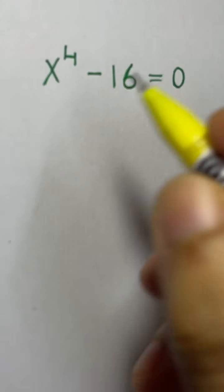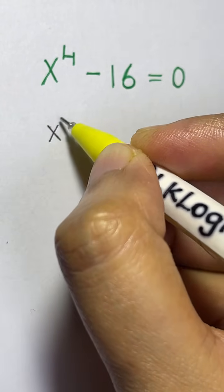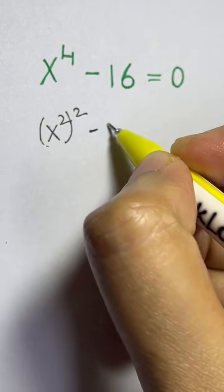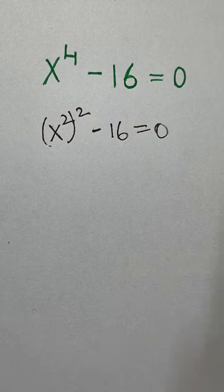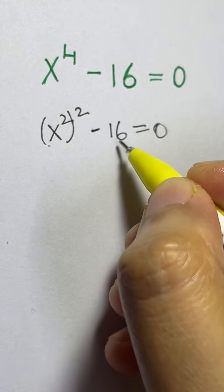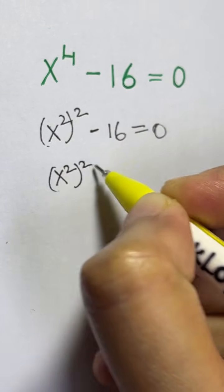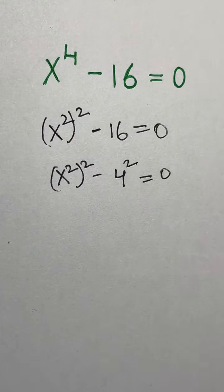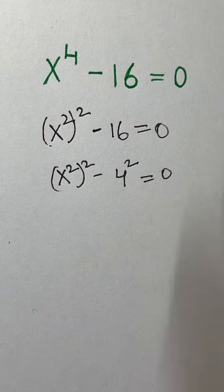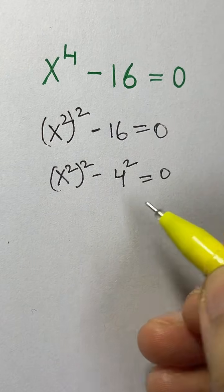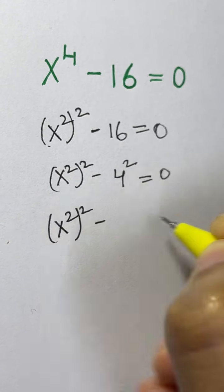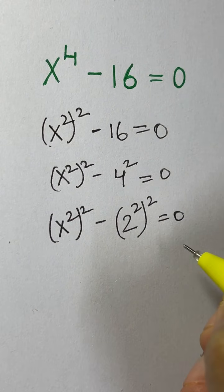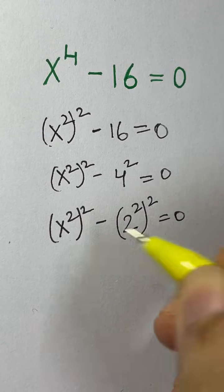We have x to the power of 4 minus 16 equals 0. We can expand and write this as (x²)² minus 16 equals 0. Now 16 can be written as 4², so we have (x²)² minus 4² equals 0. And 4² can also be written as (2²)², so we have (x²)² minus (2²)² equals 0.